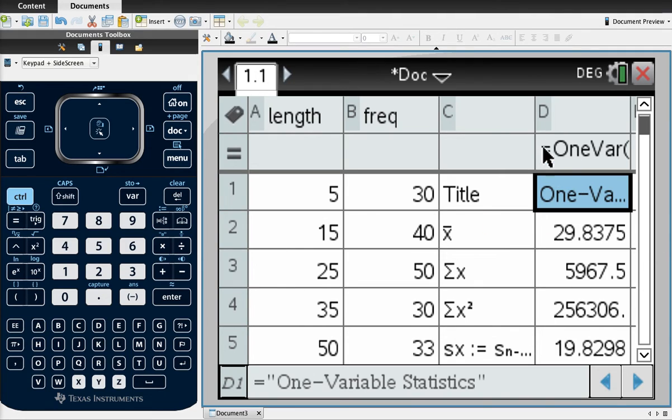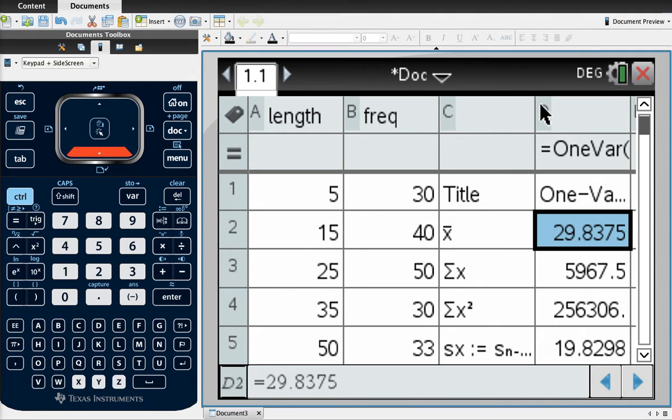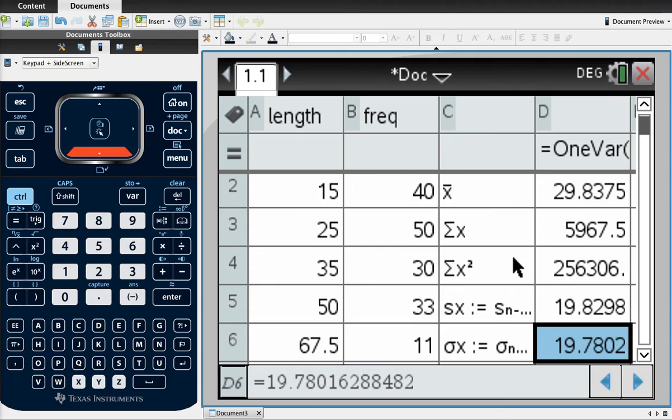And we can see that it's given me all the statistics I need there. So this symbol here, X bar, denotes the mean, so the mean is 29.8. You won't need any of these ones here. Next one of interest is this one here, Sigma X. That denotes standard deviation.